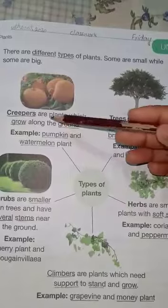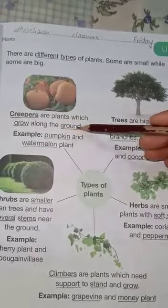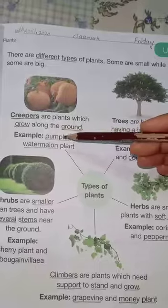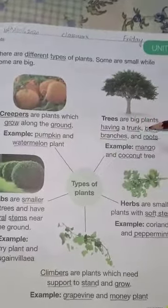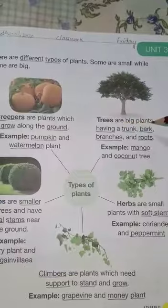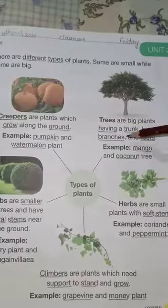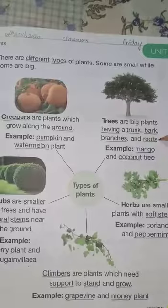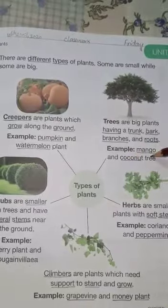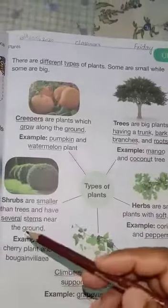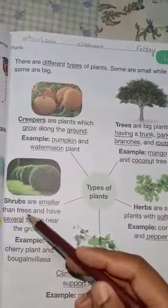The first type is creepers. Creepers are plants which grow along the ground, like pumpkin and watermelon plants. Trees are big plants having a trunk, bark, branches, and roots, like mango and coconut trees. Shrubs are smaller than trees and have several stems near the ground.